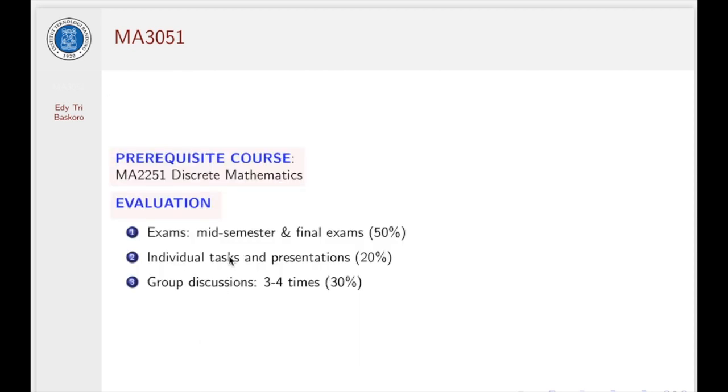For the student evaluations, it will be based on these three activities. First, exams: we have two exams, mid and final exam, and will be 50% for the weight of the evaluation. And then individual tasks and presentation, this is 20%. And group discussions, three or four times, this will be 30%.